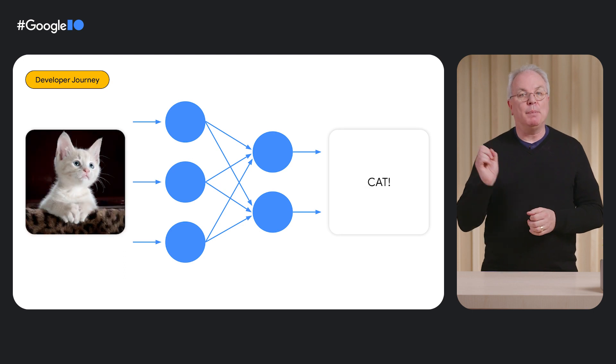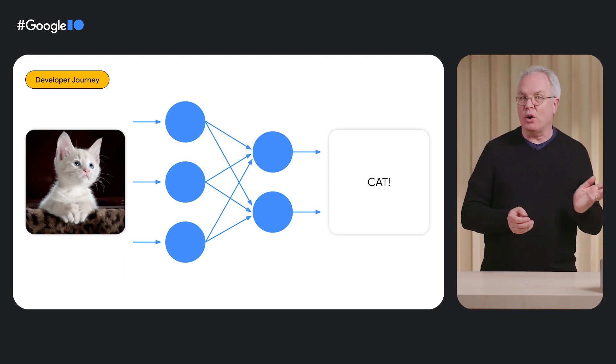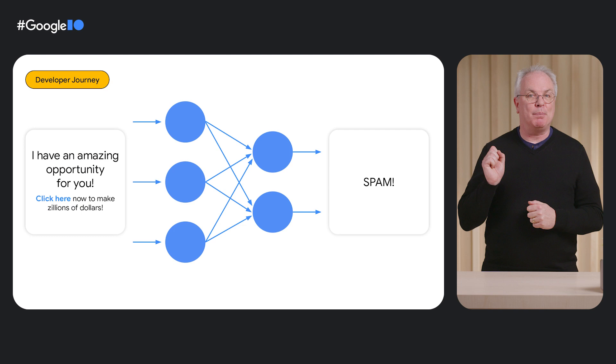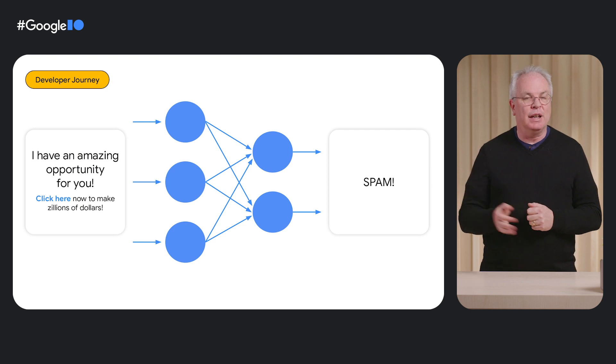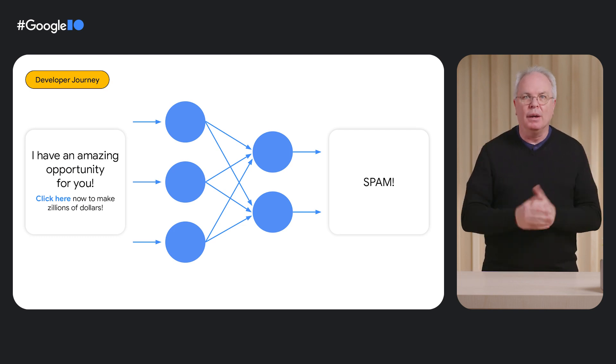So it might be a picture, and it will predict what the picture contains. Or it might be a piece of text, and it can predict the sentiment of that text — is it spam? To correctly create machine learning models to implement artificial intelligence, there are a number of steps that a developer will follow, and we'll look at those next.